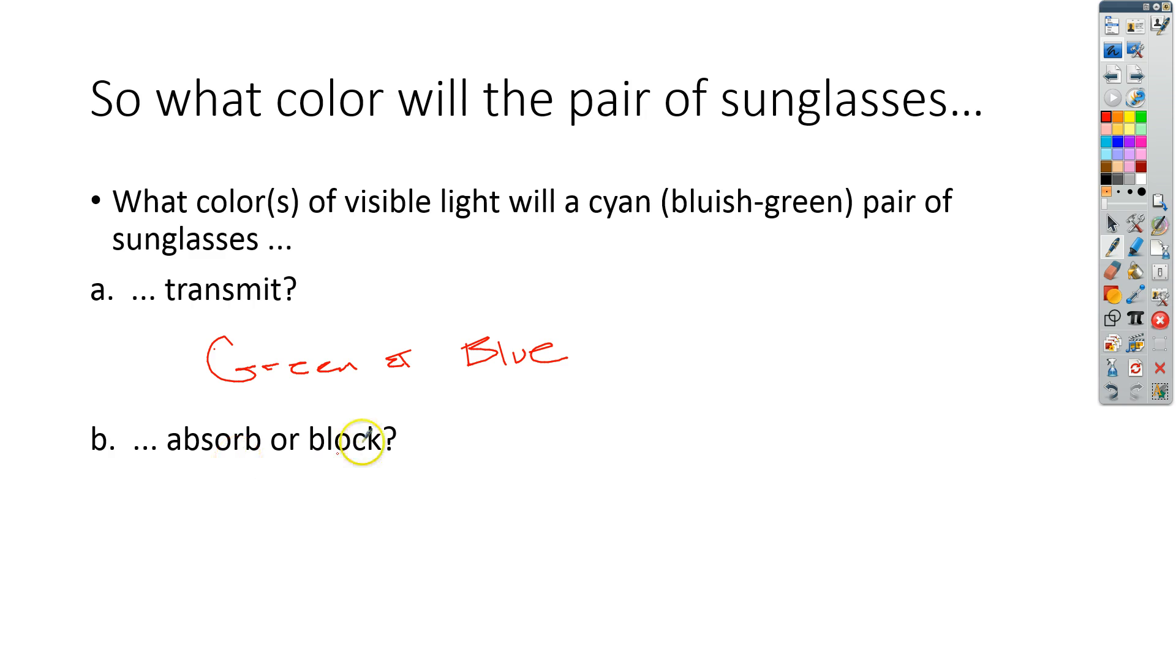Now we have to figure out which ones they absorb or block. So we're going to go back to ROYGBIV. And we know that we don't worry about green and blue because those two are transmitted. So they absorb red, orange, yellow, indigo, and violet. So it would be ROY IV.